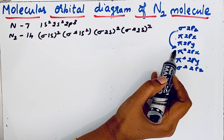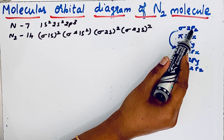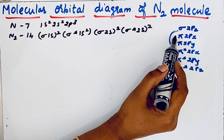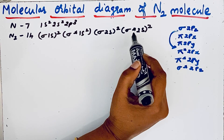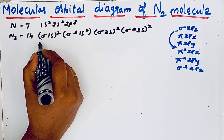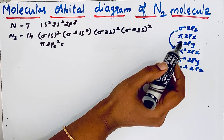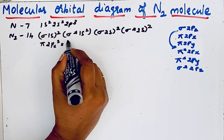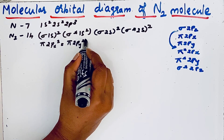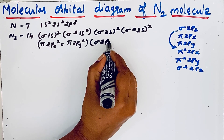This shows the relative energies of the p orbitals. For boron, carbon, and nitrogen molecules there is the possibility of sp mixing due to the small difference in their energy. That is why sigma 2p is at a higher energy and this order is reversed. After sigma* 2s2 we write pi 2px2 — because pi 2px and pi 2py both have the same energy — pi 2py2, then sigma 2pz2.